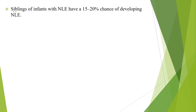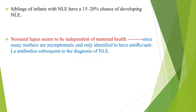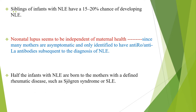Siblings of infants with neonatal lupus have a 15-20% chance of developing neonatal lupus. Neonatal lupus seems to be independent of maternal health, since many mothers are asymptomatic and only identified to have anti-Ro or anti-RNP antibodies subsequent to the diagnosis of neonatal lupus. Half of infants with neonatal lupus are born to mothers with a defined rheumatic disease, such as Sjögren's syndrome or SLE.